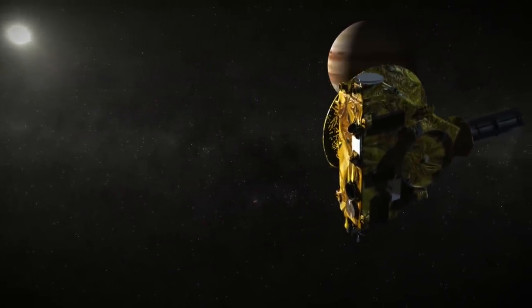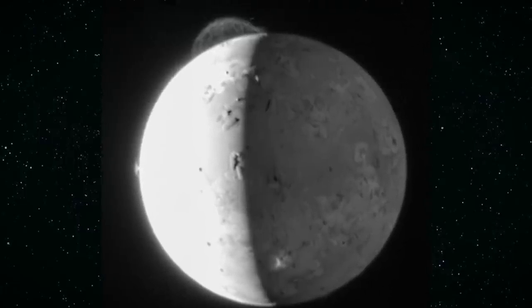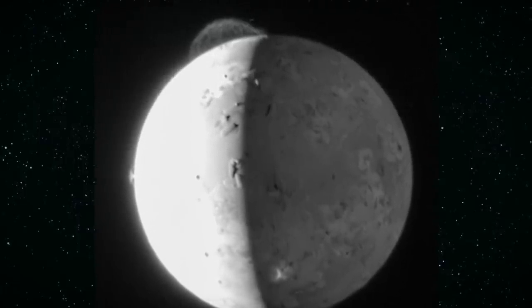On its way past, it took four months worth of fantastic close-up happy snaps of Jupiter and its moons, including this ripper of a volcanic eruption on Io. That spray is about 330 kilometres high.